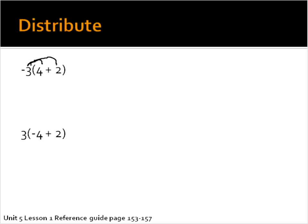Alright, so let's go ahead and solve that. Negative 3 times 4 is negative 12. And negative 3 times 2 is negative 6. When we join those together, you get negative 18.